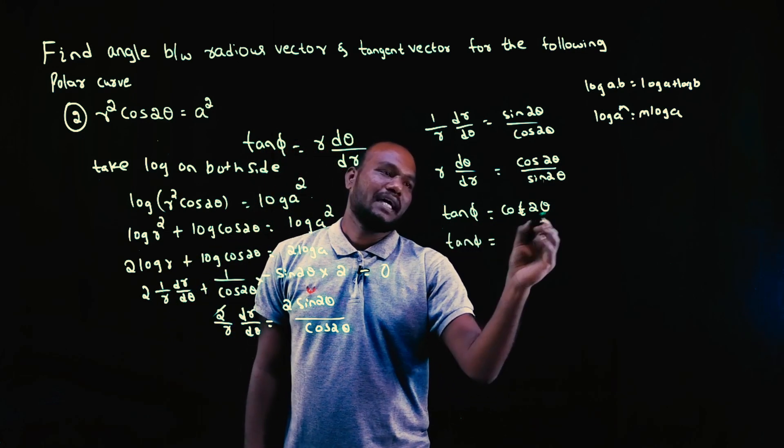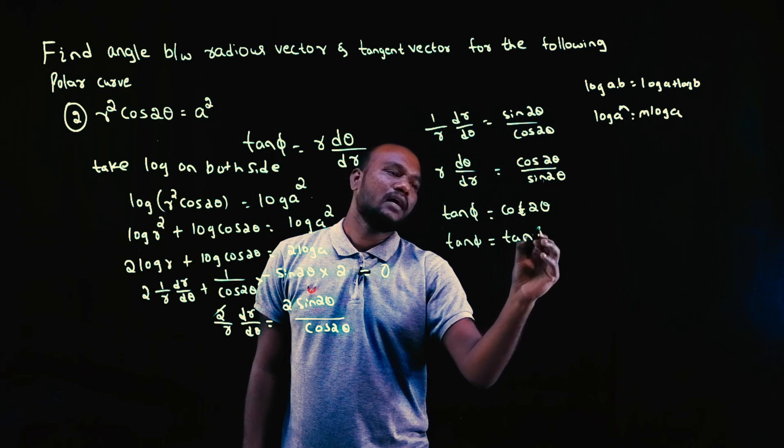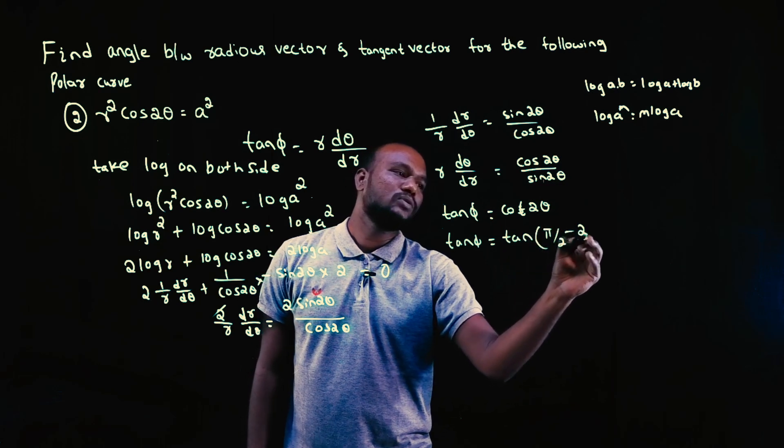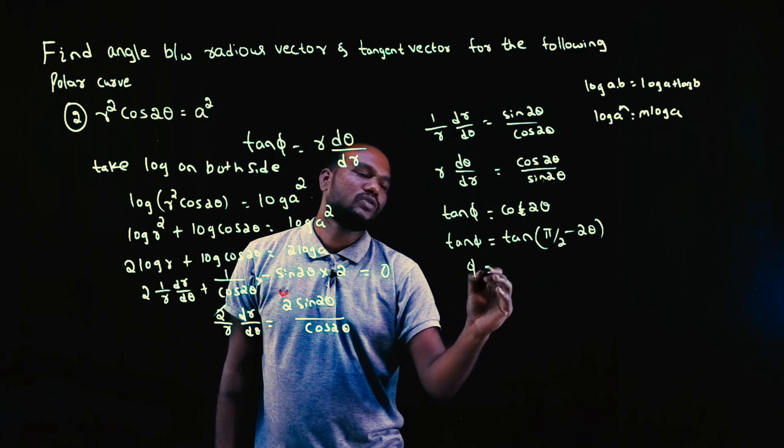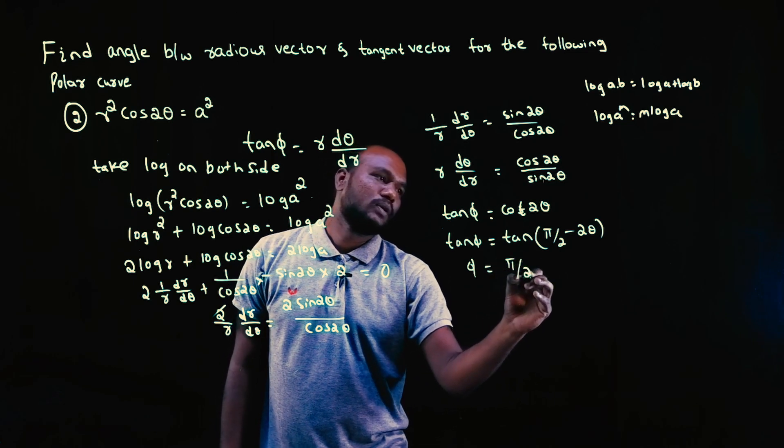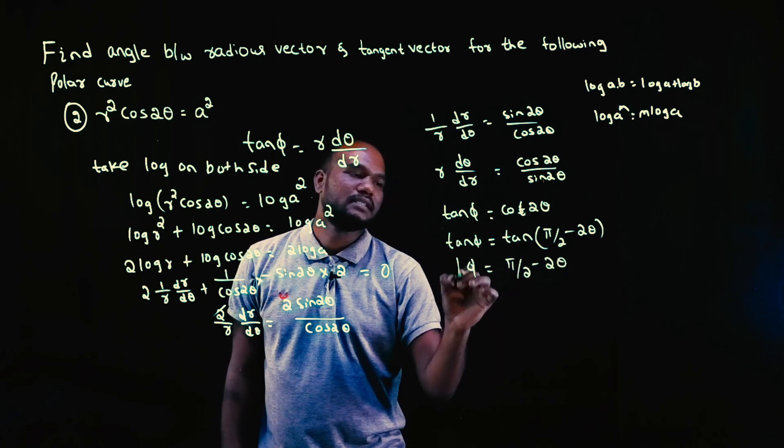This can be written as what? cot(2θ) can be written as tan(π/2 - 2θ), right? So tan φ equals tan(π/2 - 2θ). Therefore, φ equals π/2 - 2θ. This is the value of φ.